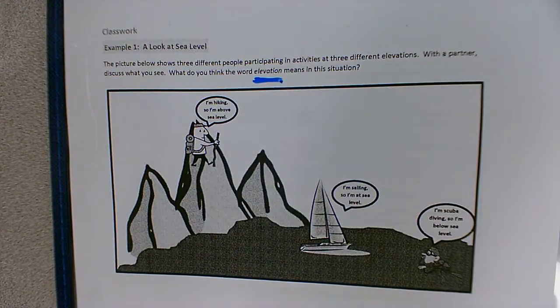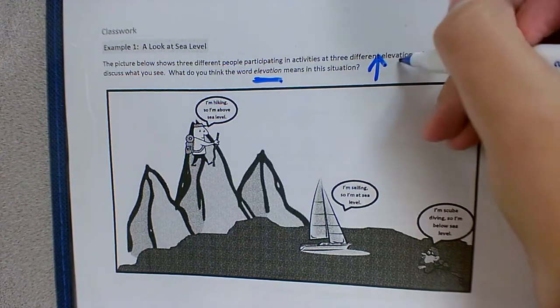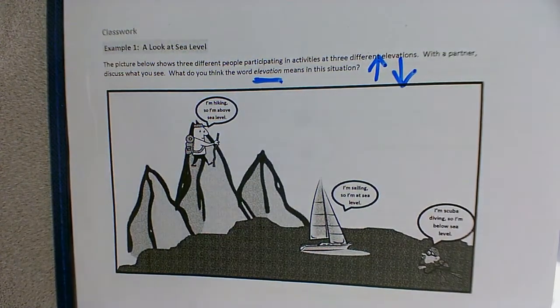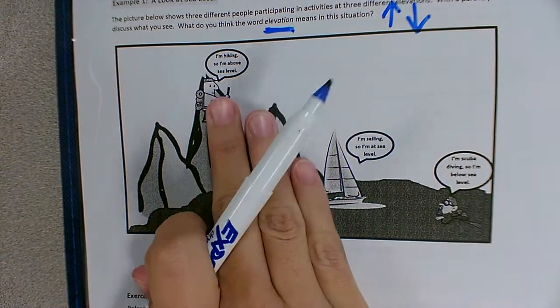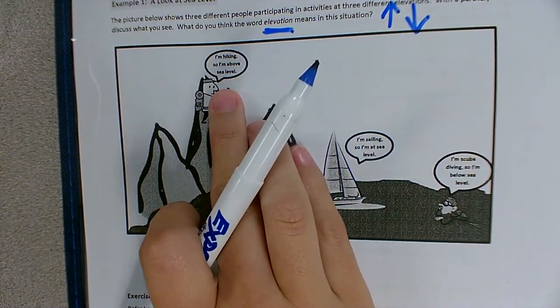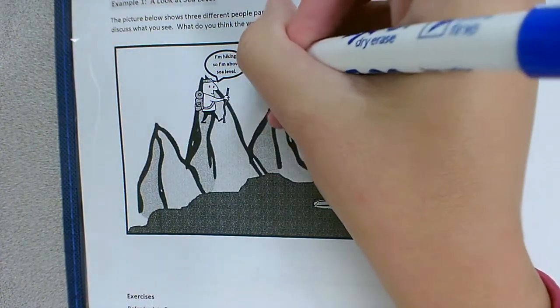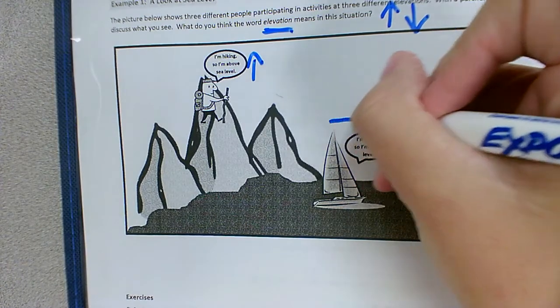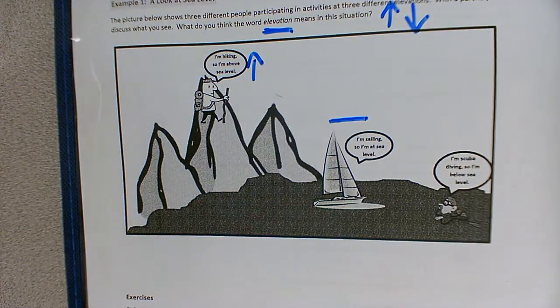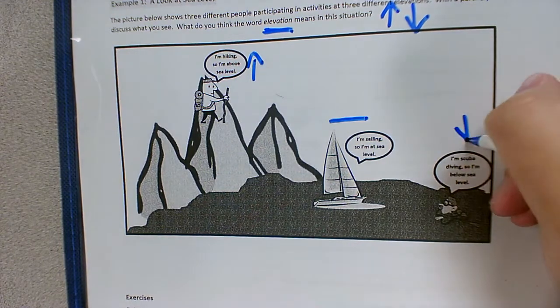So in this situation elevation means how high or how low they are in comparison to the sea level. If we read what they're saying, the hiker says I'm hiking so I'm above sea level. He's above sea level. I'm sailing so I'm at sea level. I'm going to draw a straight line to show that he's at sea level. I'm scuba diving so I'm below sea level.